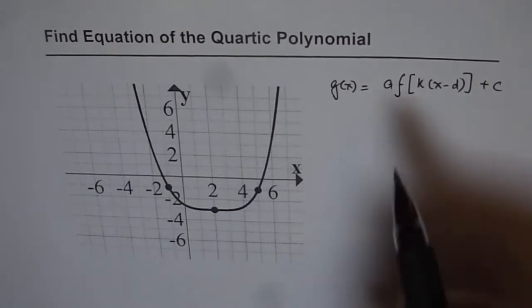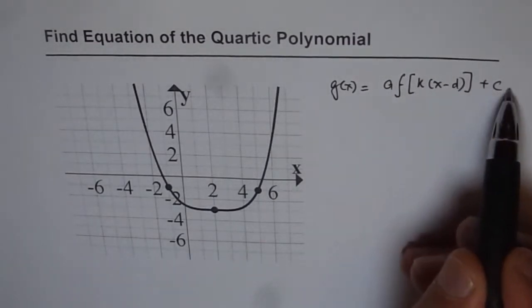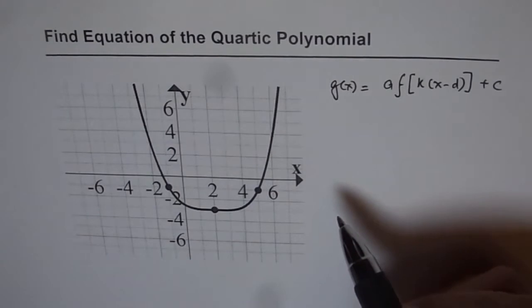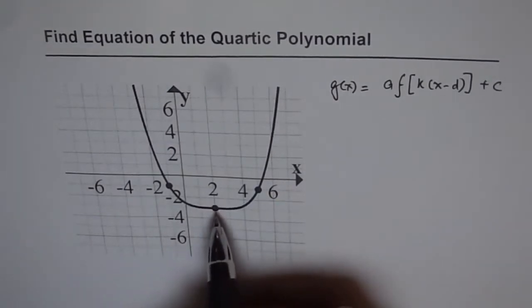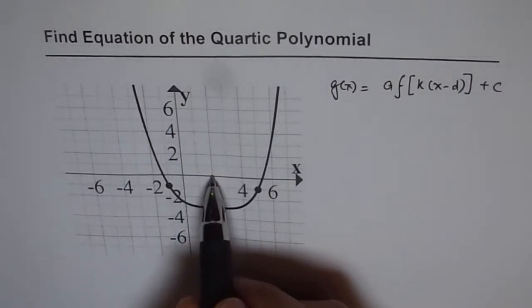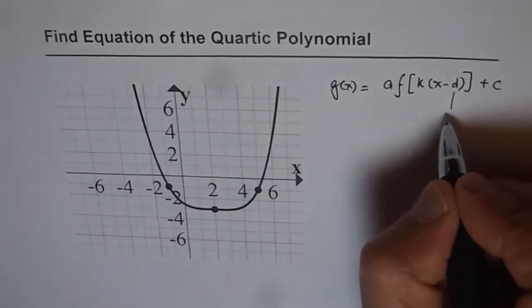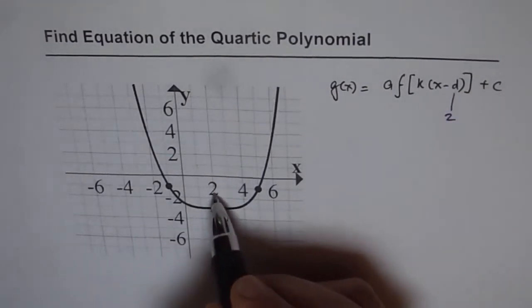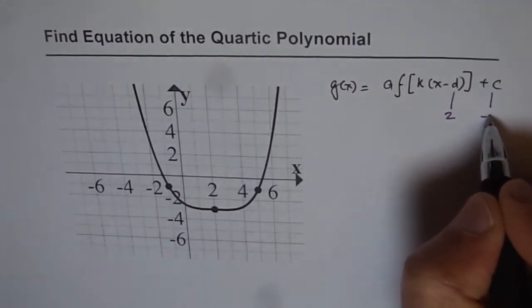Let's try to find out what is a, k, d, and c from this particular graph. Now, as you can see here, the vertex of this quartic polynomial has shifted from origin to 2 units to the right. That means d is 2 for us. And 1, 2, 3 down. So, c is minus 3 for us.